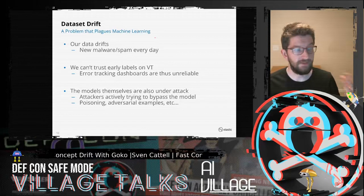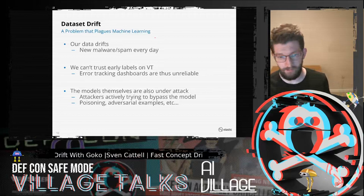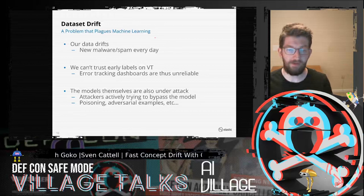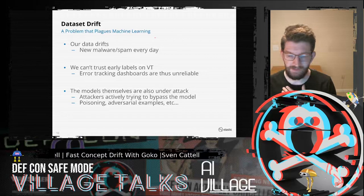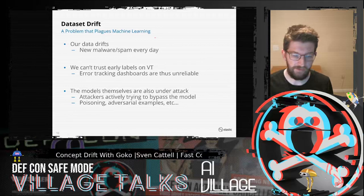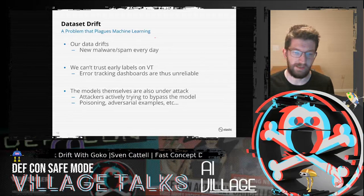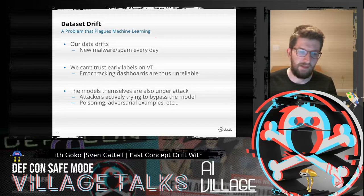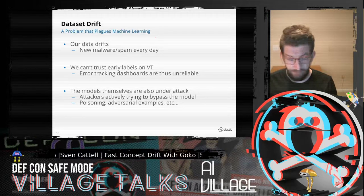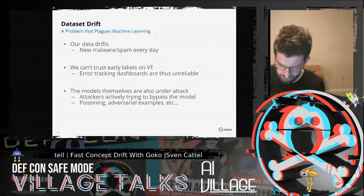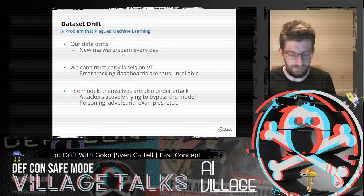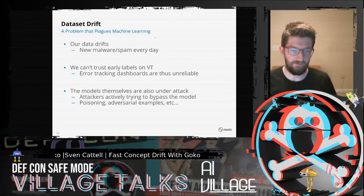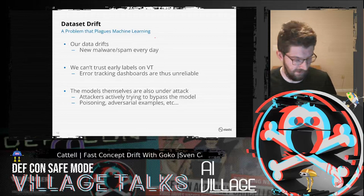One method for dealing with this is to build a dashboard that tracks the error, and when the error gets too high you discard the model and get a new one. But the problem is I don't trust VirusTotal labels, and I don't think anyone really should. We have to try to trust them because of the sheer volume of data. We'd rather get ahead of that and figure out where the drift is happening.